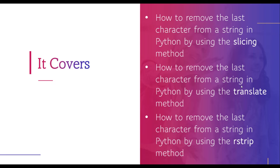These are the topics we are going to cover. Basically these three are the methods we are going to use to remove the last character from a string. The first method is the slicing method, the next is the translate method, and the last is the rstrip method.